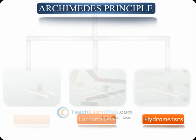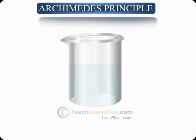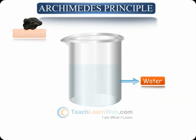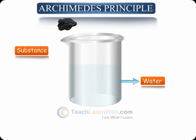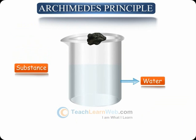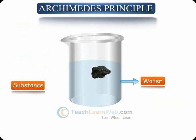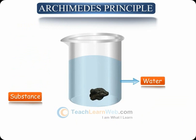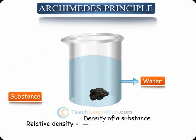Relative density of a substance is the ratio of its density to that of water. Relative density equals the density of a substance divided by the density of water.